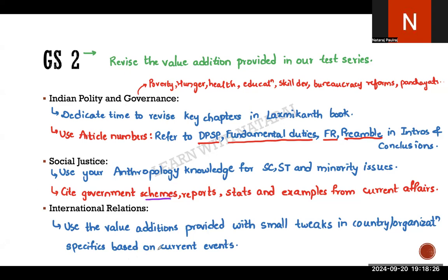IR is four questions, 50 marks, but relatively scoring. The themes tend to be repetitive. Leverage the value-added content from Round 1 — pay attention to the frameworks, introductions, and conclusions. References like Henry Kissinger, Kennedy, and Article 51 should be strategically pre-planned. Decide in advance: for this question I'll use this intro, for that one I'll use that. Just execute — no heavy thinking required. The body requires recalling ideas but use the general framework provided.